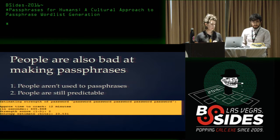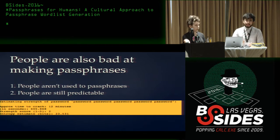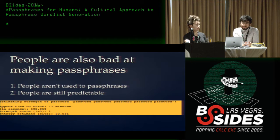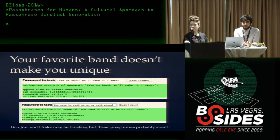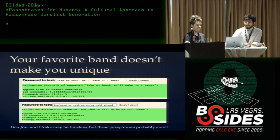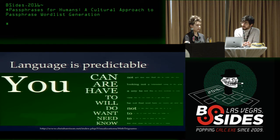What we found is that people are bad at making passphrases for many of the same reasons as passwords. They're just not used to it, so the rules were confusing. But they're also still predictable — if you enter 'password password password password password,' it might be 50 characters but it won't pass. The other problem was that some people succeeded but later told us their passphrase was a quote from their favorite book or band — which also happened to be listed among their Facebook or Tumblr likes. Drake and Bon Jovi quotes actually passed our 100-bit standard.